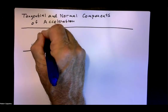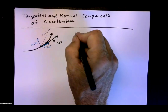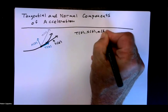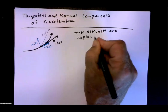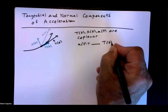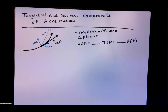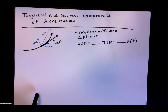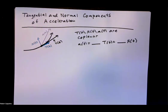Here is the acceleration vector a of t. The key fact is that T of t, N of t, and a of t are coplanar — they lie in the same plane. So any vector in that plane, like a of t, is some multiple of T of t plus some multiple of N of t. That is, a of t is a linear combination of those two vectors, and we want to determine what those multiples are.